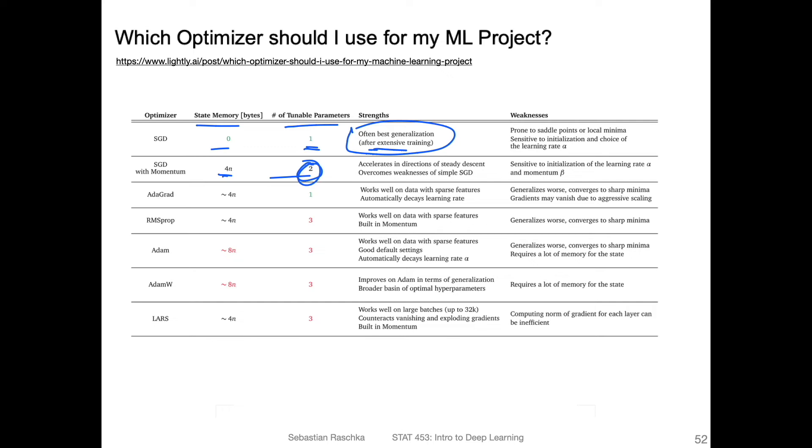And then this one accelerates and overcomes weaknesses. Here with Adam, they also say it generalizes worse than SGD.